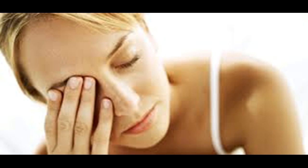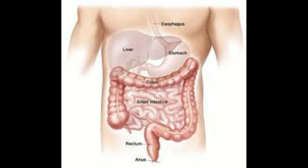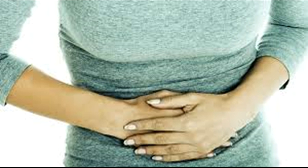Causes. Doctors aren't sure what causes stomach cancer. There is a strong correlation between a diet high in smoked and salted foods and stomach cancer. As the use of refrigeration for preserving food has increased around the world, the rates of stomach cancer have declined. In general, cancer begins when an error, or mutation, occurs in a cell's DNA. The mutation causes the cell to grow and divide at a rapid rate and to continue living when a normal cell would die. The accumulating cancerous cells form a tumor that can invade nearby structures, and cancer cells can break off from the tumor to spread through the body.